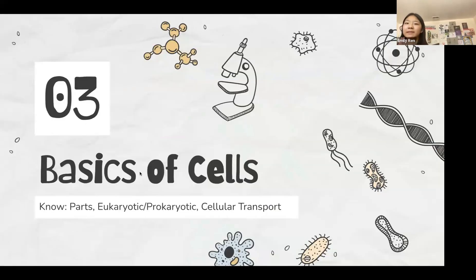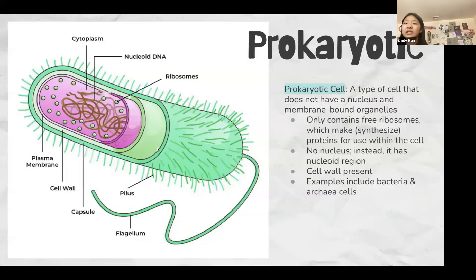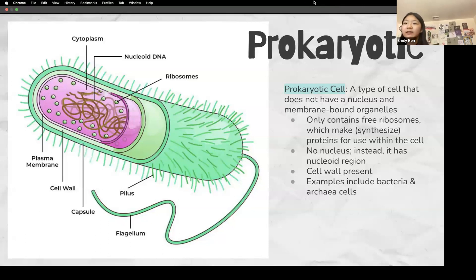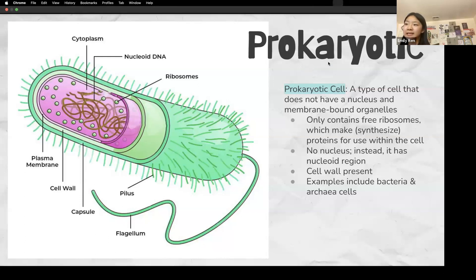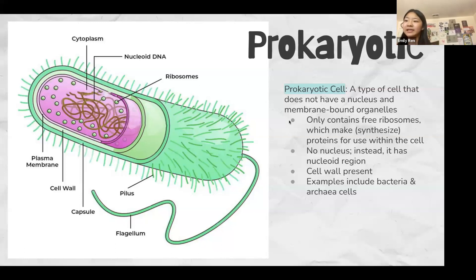Now we're going to go through the basics of cells. The prokaryotic cell is a type of cell that does not have a nucleus or membrane-bound organelles. These cells only contain free ribosomes, which make proteins for use within the cell. Bound ribosomes connected to rough endoplasmic reticulum make proteins that are exported outside. Instead of a nucleus, prokaryotes have a nucleoid region where all the DNA is. There is a cell wall present; examples include bacteria and archaea.